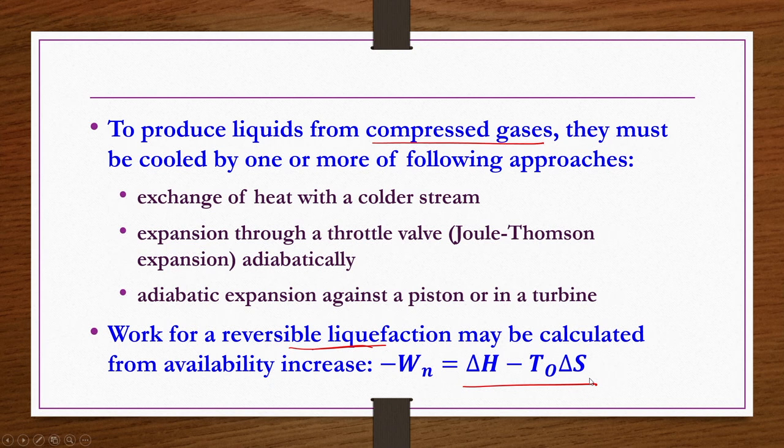Now we will discuss the manufacturing of oxygen and nitrogen. As with any chemical manufacturing discussion, we start with the properties of the material, then raw materials, quantitative requirements, flow sheet, etc. Here we will do the same thing.